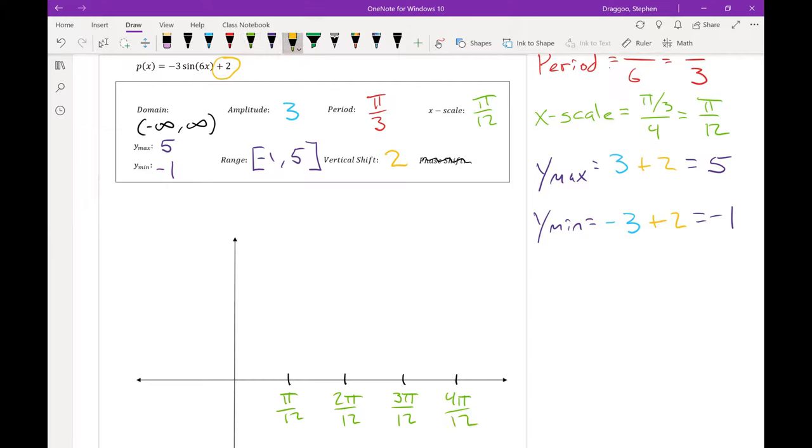The one big change that I'm going to add is to put the vertical shift line on the graph. So this vertical shift shows up at a y value of 2. And then I'll place my maximum and minimum y values on here as well. 5 and negative 1.